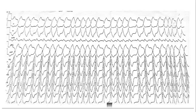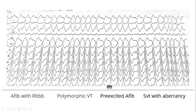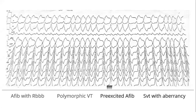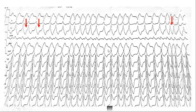So this is a wide complex tachycardia. These are the differentials if they ask you: AF with right bundle, because you are seeing right bundle here; polymorphic VT — yes, any wide irregular complex polymorphic VT will come into play; pre-excited AF; and SVT with aberrancy. AT will be irregular — it's not always the case that it will be regular. So these are the four differentials.